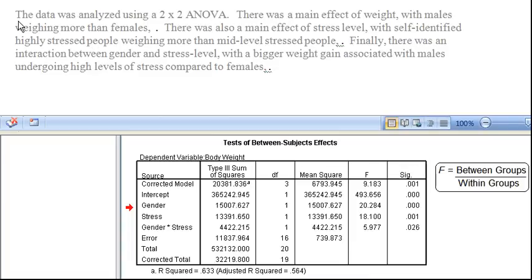So the data was analyzed using a 2x2 ANOVA. The first two indicates that our variable gender had two levels, male and female. The second two indicates that our other variable stress had two levels, mid-level stress and high-level stress.